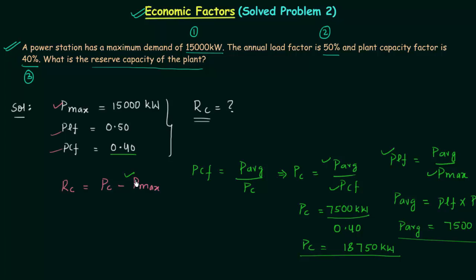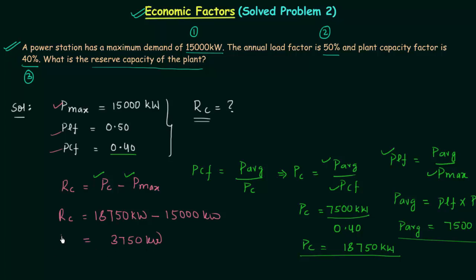We already had Pmax and now we have PC also. The reserve capacity is simply equal to 18,750 kW minus 15,000 kW, which is equal to 3,750 kW. This is the answer of this problem. This particular way to calculate the reserve capacity is the first method.